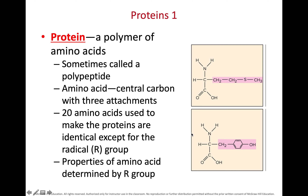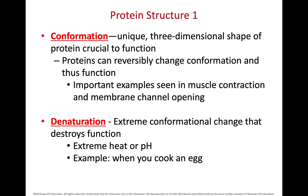Amino acids are the subunit of a protein. They have parts that are the same, but the region highlighted in pink — the R group — gives different amino acids their different chemical properties. In human beings, we have 20 different amino acids used to make all of our proteins. Think of this as 20 different kinds of Lego bricks that we mix and match to make the different proteins of our bodies.